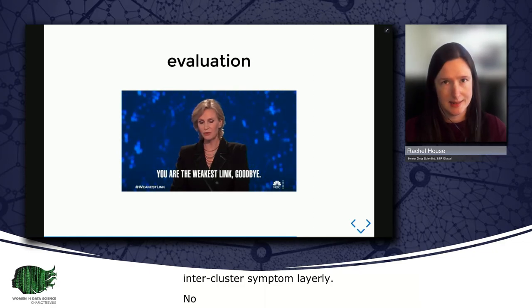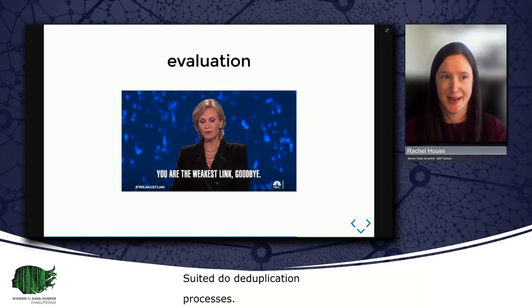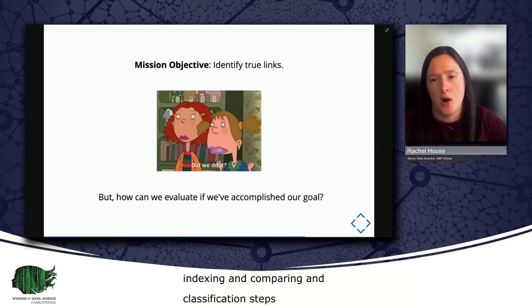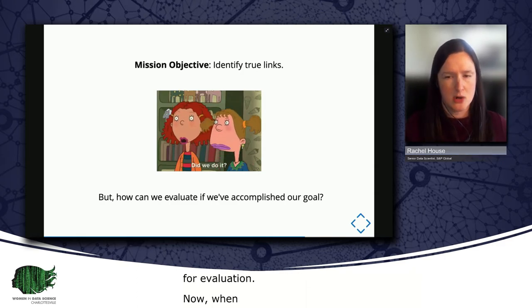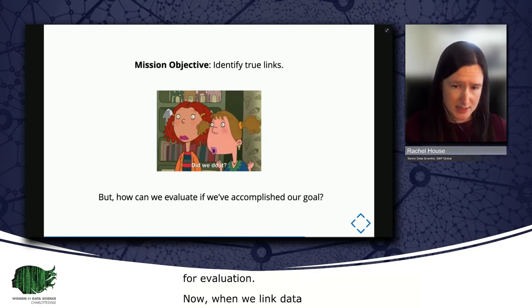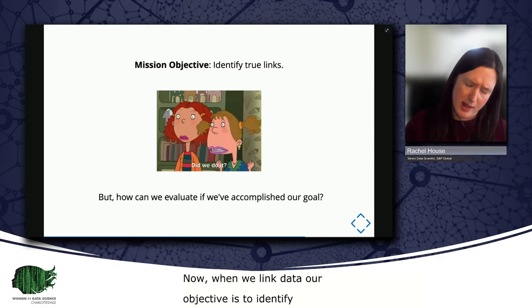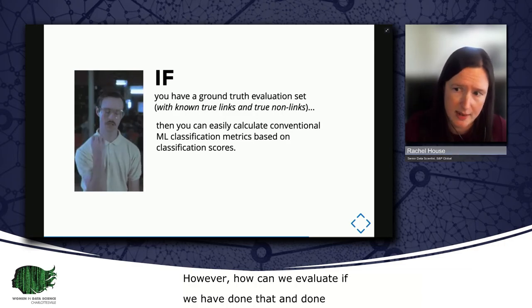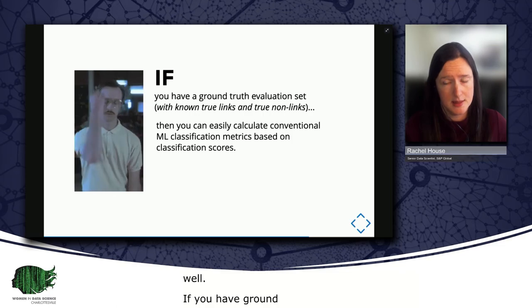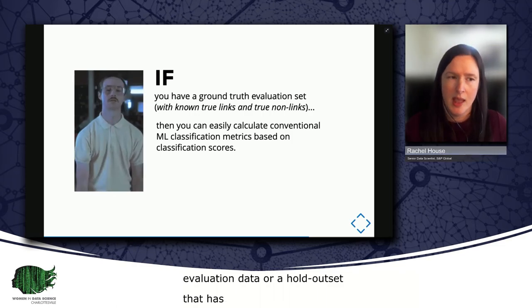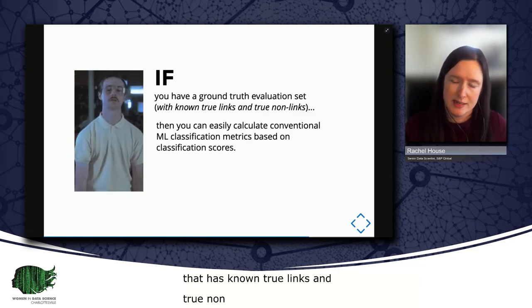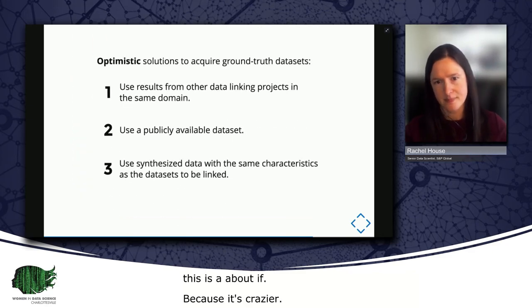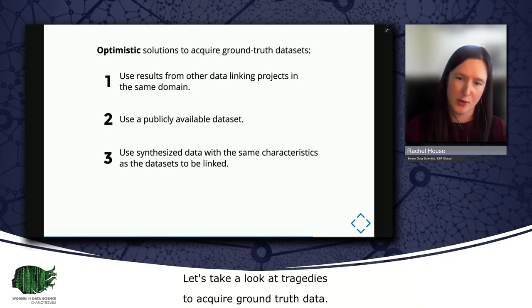After we've built out our cleaning, indexing, comparing, and classification steps, it's time for evaluation. Now, when we link data, our objective is to identify true links, pairs of records that represent the same real-world entity. However, how can we evaluate if we've done that and done it well? If you have ground truth evaluation data or a holdout set that has known true links and true non-links, then you can calculate metrics based on your output classification scores. And this is a big if, because ground truth linking data is scarce. So first, let's take a look at some strategies to acquire ground truth data.